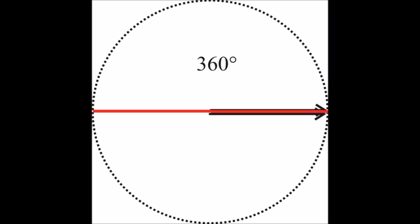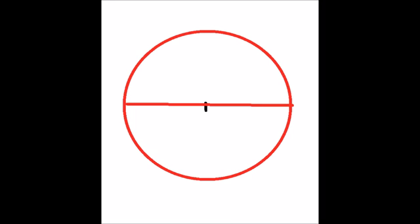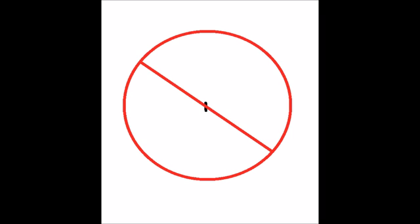Other than a circumference, the only other important word is diameter. This is the distance of any straight line that passes through the center and touches the circle twice. As long as the diameter touches the exact center of the circle and two ends of the circle, it will always be the exact same length.